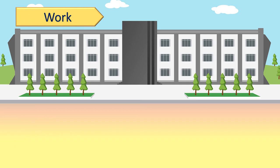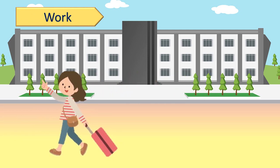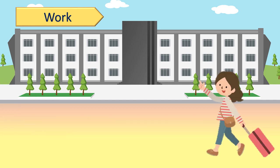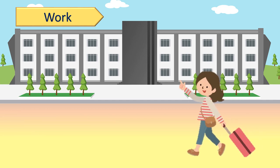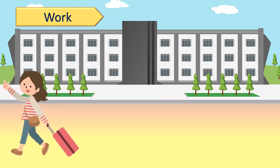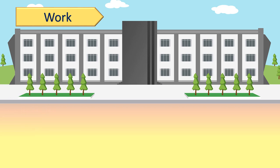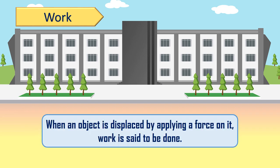We see that as the girl pulls the trolley bag, the position of the trolley bag changes every time. From this, we can say that the trolley bag is displaced. From this we will define work: when an object is displaced by applying a force on it, work is said to be done.